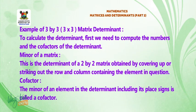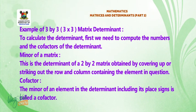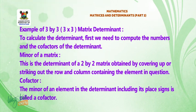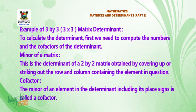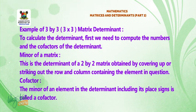Example of a 3×3 matrix determinant. To calculate the determinant, first we need to compute the numbers and the cofactors. Minor of a matrix: this is the determinant of the 2×2 matrix obtained by covering up or striking out the row and column containing the element in question. Cofactor: the minor of an element in the determinant, including its sign, is called a cofactor.